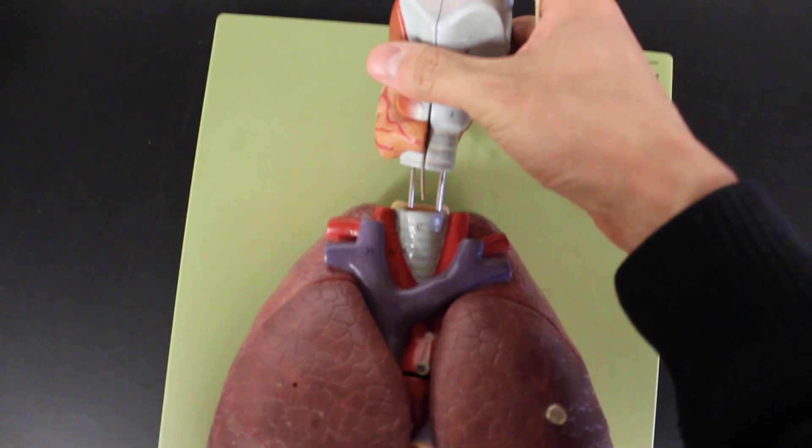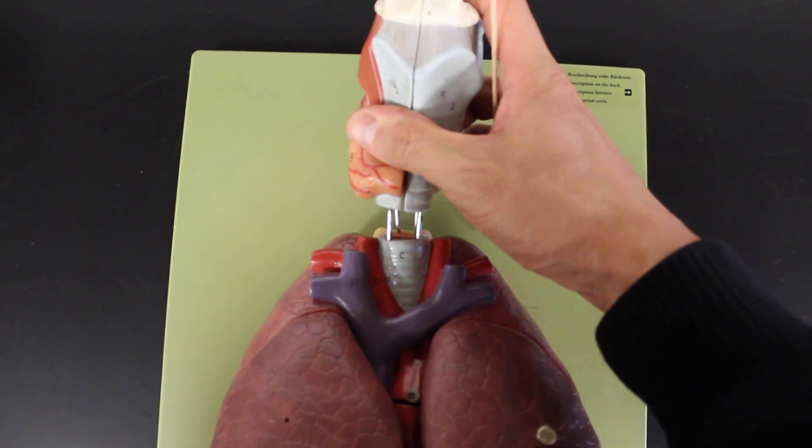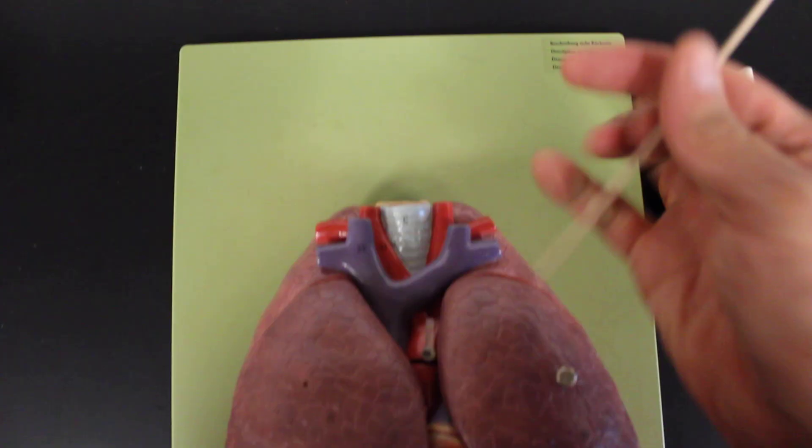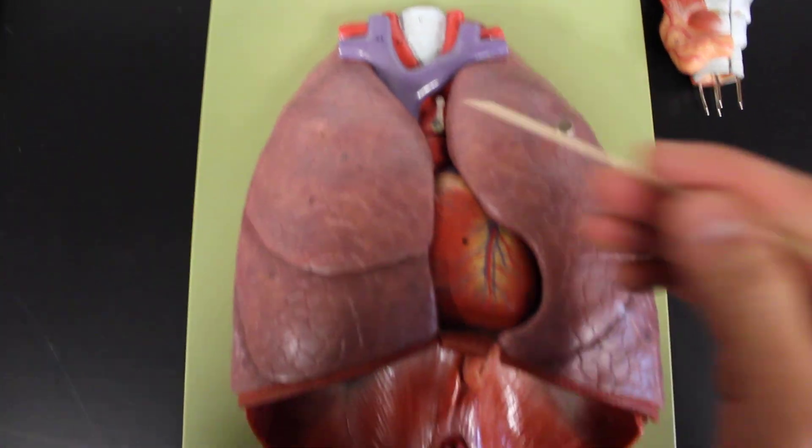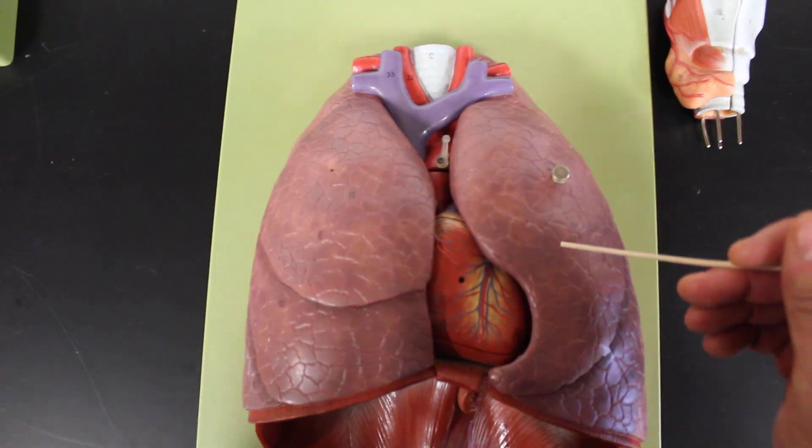And then of course leading all the larynx going into what we call the trachea. And so with the trachea, we'll find then the trachea leading into the lungs. What we'll find is we have two lungs, a right and a left lung.